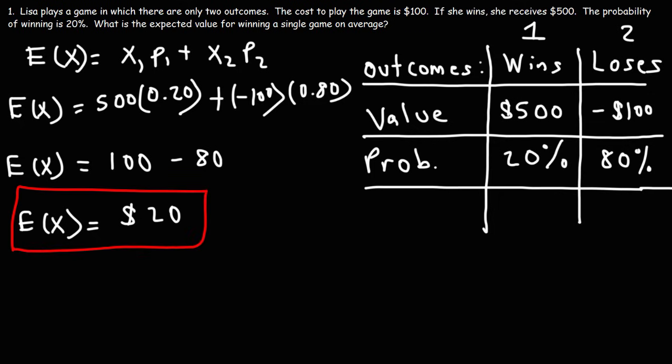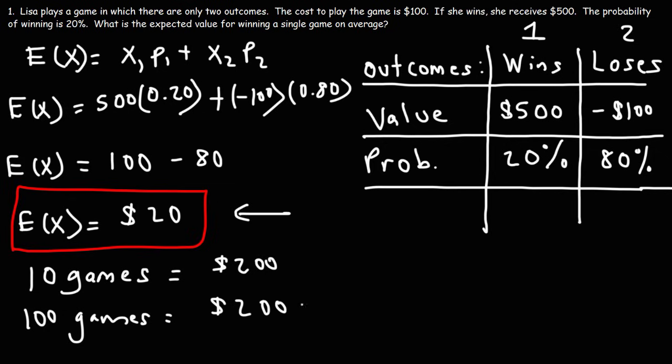So on average, if she continues to play this game, she can earn $20 per game. Now, how much would she expect to win if she were to play 10 games? Well, if she can average $20 per game, then 10 games would, at this rate, give her an expected earnings of $200. If she were to play 100 games, based on this average earnings, she would expect to have a total of $2,000 at that point. And so that's how you can calculate expected value for winning a single game. And then you could use that to estimate what your total earnings will be for playing a certain number of games.